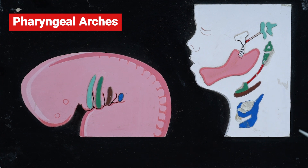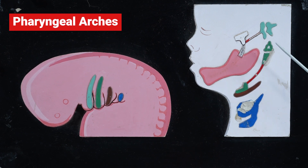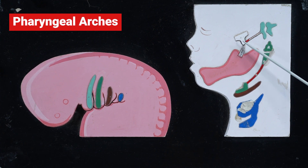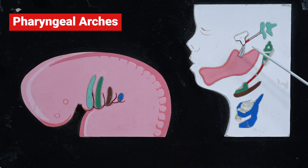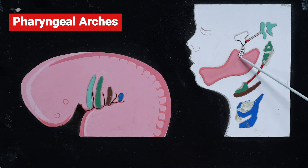The first pharyngeal arch gives rise to the maxillary process and the mandibular process, which gives rise to the development of the maxilla and the mandible. Apart from this, the first pharyngeal arch cartilage, also known as Meckel's cartilage, gives rise to the malleus, incus, and the spine of the sphenoid. The cartilages develop into these bones, and the perichondrium where it persists gives rise to the anterior ligament of the malleus and the sphenomandibular ligament, which extends from the spine of the sphenoid to the lingula.